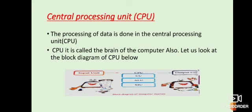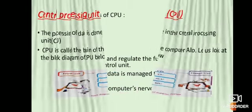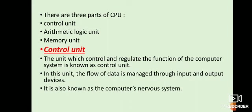CU means control unit, ALU is arithmetic logical unit, MU is memory unit. Then we have input devices, central processing unit with its three parts, and output unit. There are three parts of the CPU - CU control unit, ALU arithmetic logical unit, and MU memory unit.